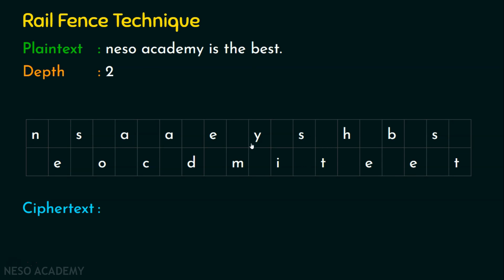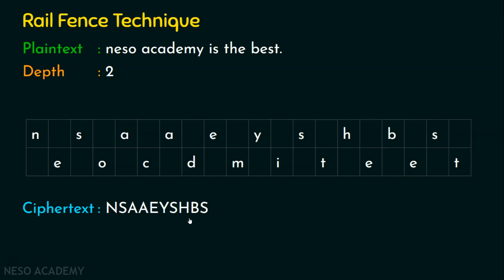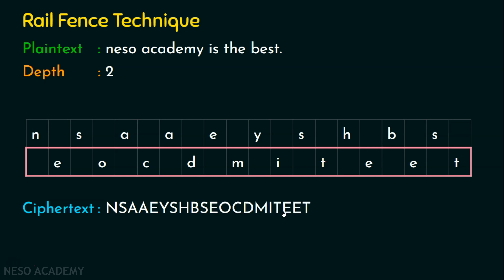Now I am required to read in rows. What's the first row? N-S-A-A-E-Y-S-H-B-E-S. This first row forms the first half of the ciphertext. Then we take the second row, which forms the later part of the ciphertext: E-O-C-D-M-I-T-E-T. So this is the ciphertext for the plaintext 'Neso Academy is the best'. If you give the ciphertext to someone, will they be able to find out it is 'Neso Academy is the best'? It's definitely not easy to recognize.